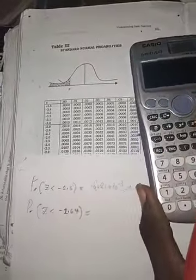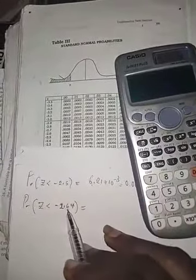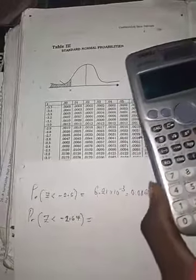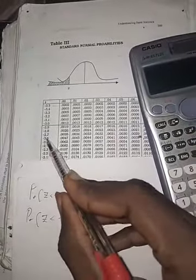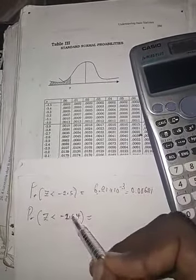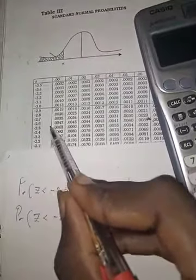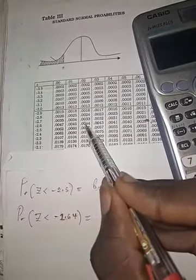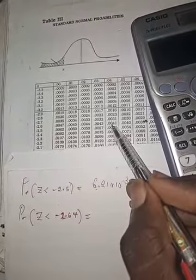So that is how to make use of the calculator, the Casio fx991ES Plus calculator. And for minus 2.64, the same thing, you have 2.6 under 4, that is what minus 2.64 means. Minus 2.6 under 4, so I have 0.0041.